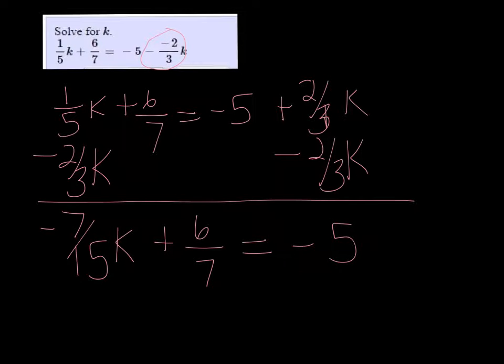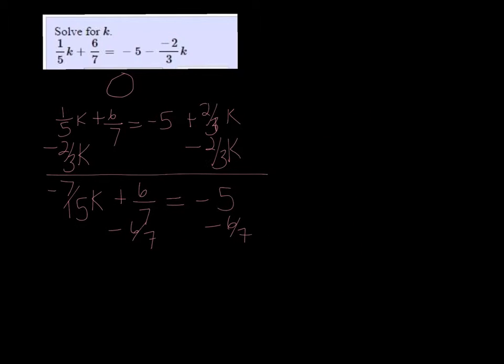Alright, now I want to get that k alone, so I'm going to subtract the 6/7 on both sides. So I'm going to do negative 5 minus 6 fraction 7. And I get negative 41/7.